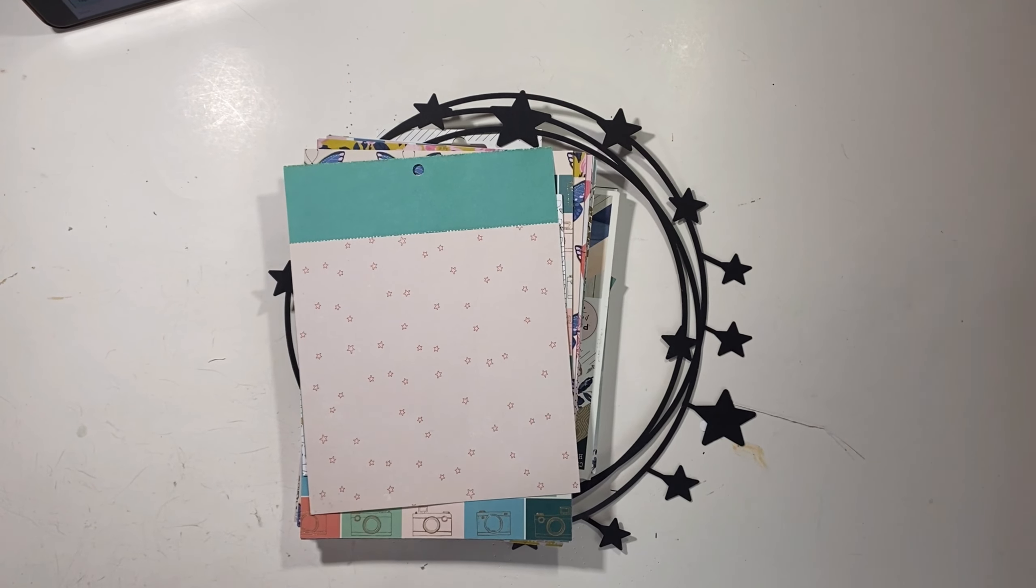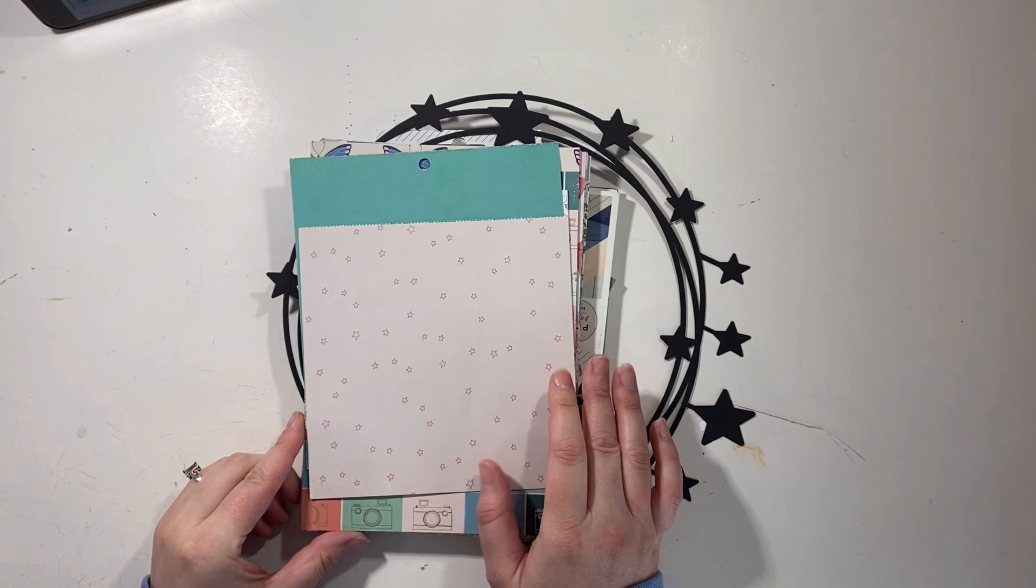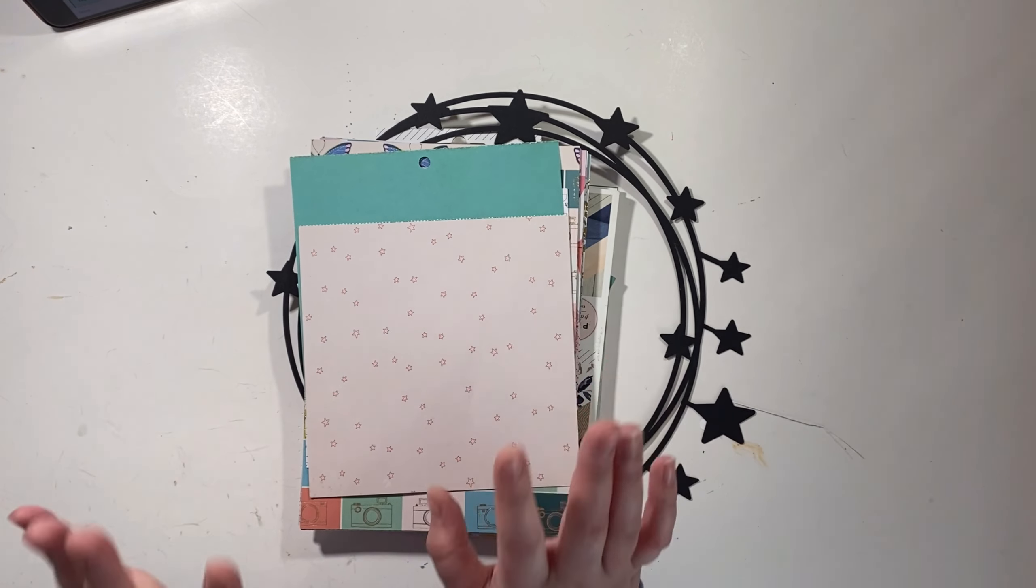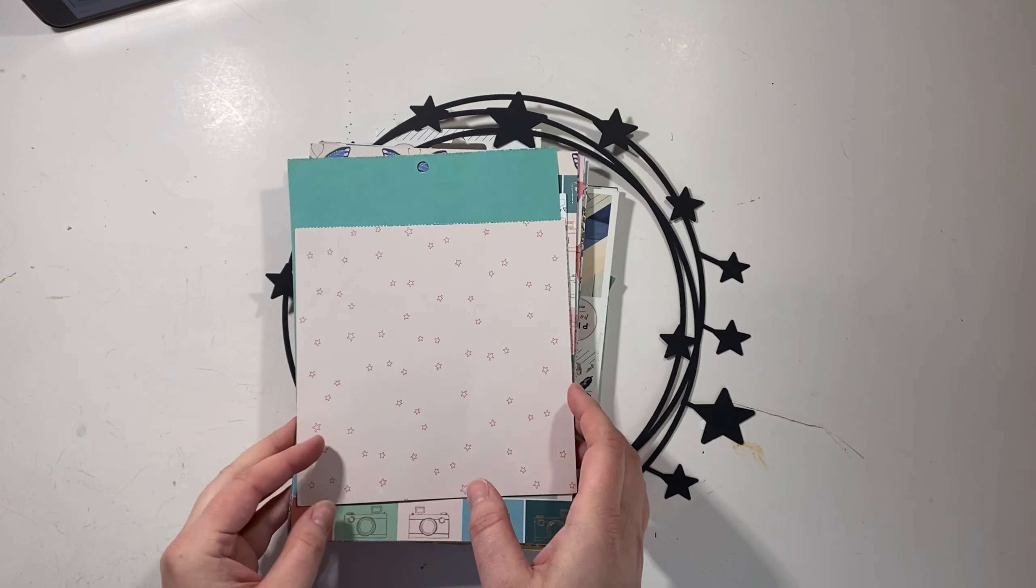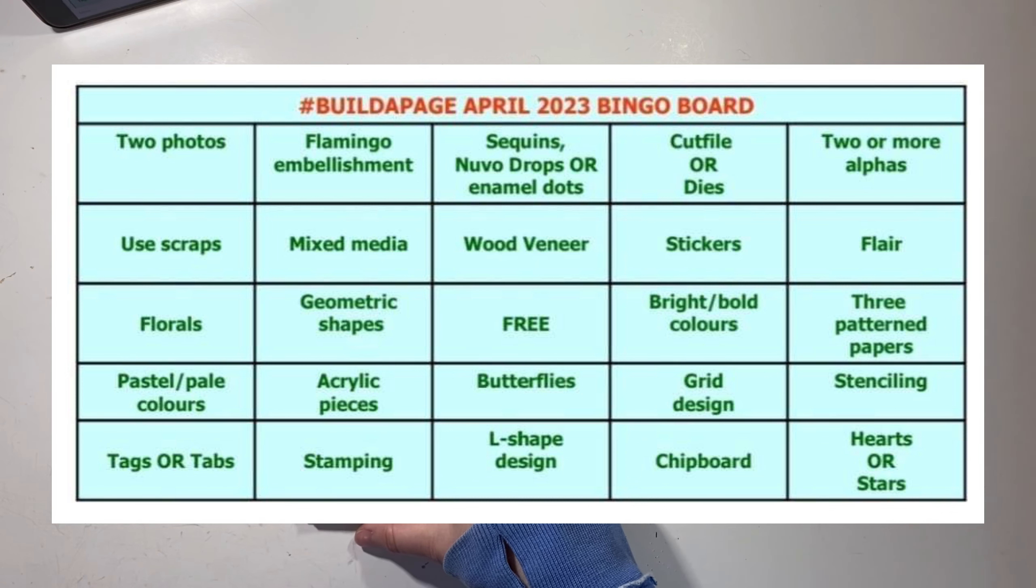Hello everyone, it's Christy from Christy's Beautiful Life. Welcome back to part two of Build a Page for 20 for April 2023. We are using a bingo board to create our page kits. So I did the first two already.